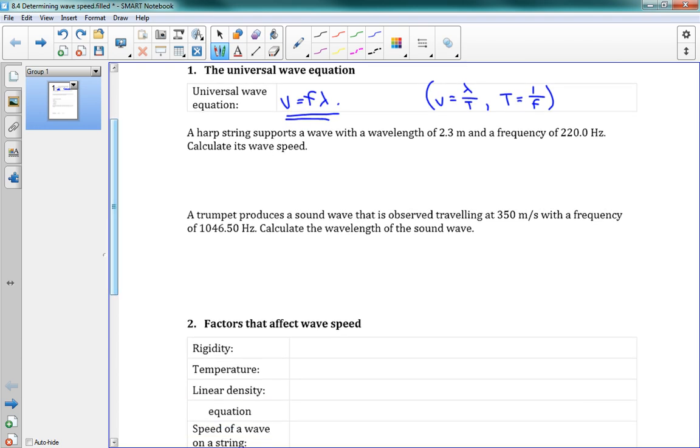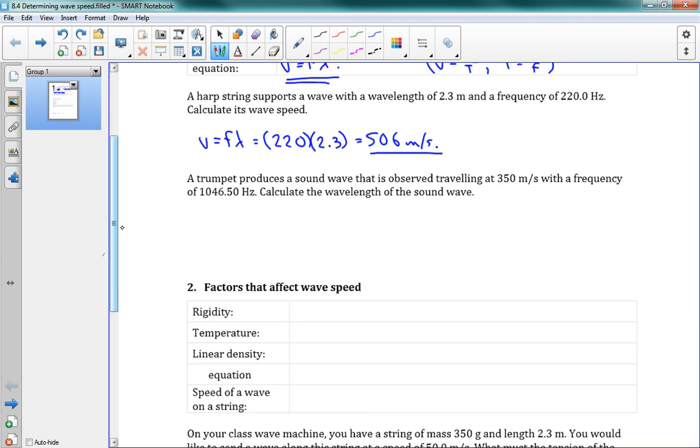The first problem says a harp string supports a wave with a wavelength of 2.3 meters and a frequency of 220 hertz. Calculate its wave speed. And we just use the equation v equals f lambda. So we've got 220 hertz, and 2.3 meters, and that just gives us 506 meters per second. So that tells us how fast that wave is traveling through the air, given its wavelength and its frequency.